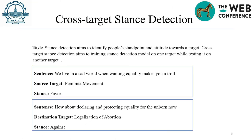First, let's look at the task definition. Stance detection aims to identify people's standpoint and attitudes expressed in text towards a target. Cross-target stance detection aims to detect the stance of targets which are not in the training set. The source and destination targets are paired with their corresponding sentences and stance labels.